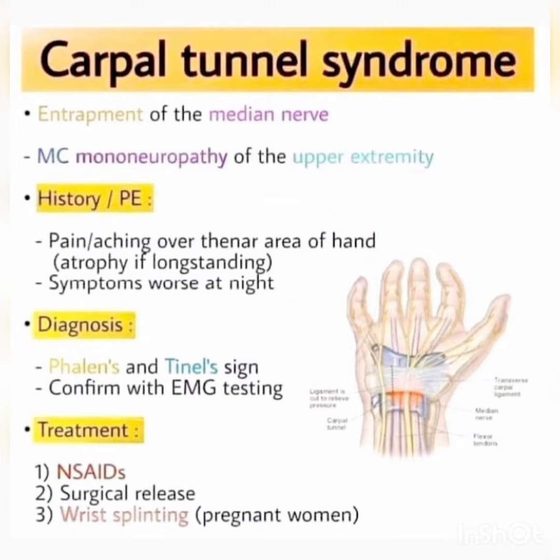The clinical presentation includes pain or aching over the thenar area of the hand, atrophy if it is a long-standing condition, and symptoms that are worse at night. Diagnosis is made using Phalen's sign and Tinel's sign, confirmed with EMG testing.